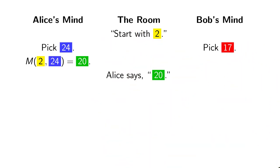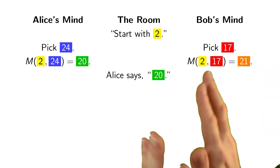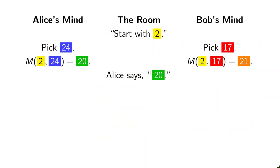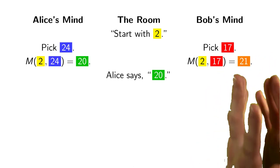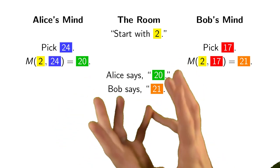Bob's going to do the same kind of game. He had already picked that secret number 17 that only he knows. He'll mix it in with the public number 2. And maybe that mixing function in this case will produce the number 21. He'll then take that number 21 and announce it to the room.